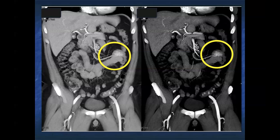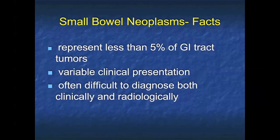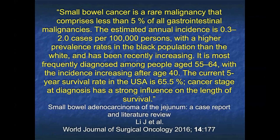We always think about small bowel tumors as obstructing bowel, but the reality is many of the lesions grow exophytically, many are small, and if you're waiting to see bowel obstruction, you're going to miss a lot of lesions. Small bowel tumors have a variable clinical presentation, from the acute abdomen to patients with vague abdominal pain, which explains the difficulty of diagnosing them.